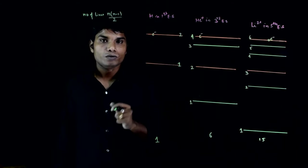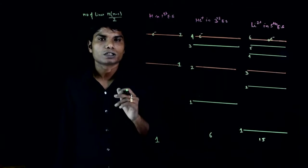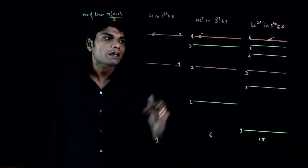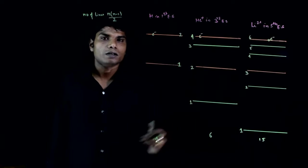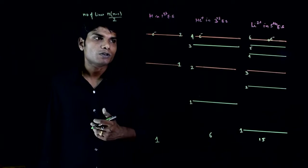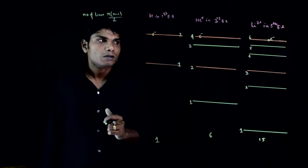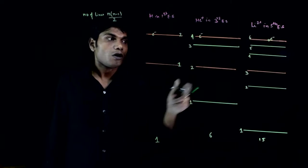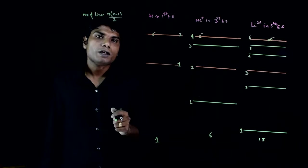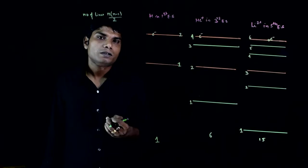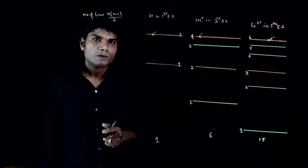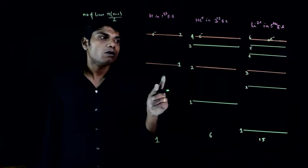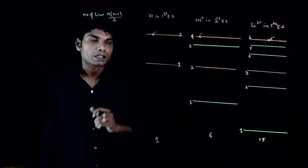But it is not necessary that the answer will be 22 — it could be less. Why? Because some lines will be common. The same line may be emitted from all three species. For example, if a red color wavelength comes out of one and the same wavelength also comes out of the other two, you have counted it three times. There are some lines which can be common, so we need to ensure no multiple counting happens.